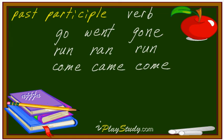Most people understand go, run, come as present — actually, not exactly present. This first form is actually infinitive. The infinitive form is the original form. The second one is the past form, which is yesterday, last year, this morning — things like that. The third one right here — this is the problem. This is the troublemaker.